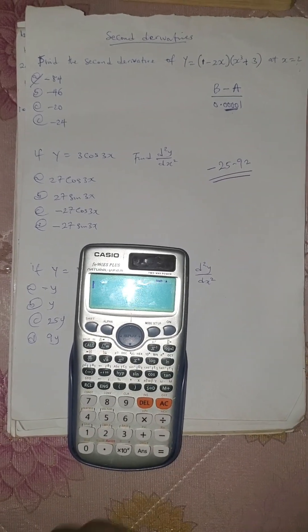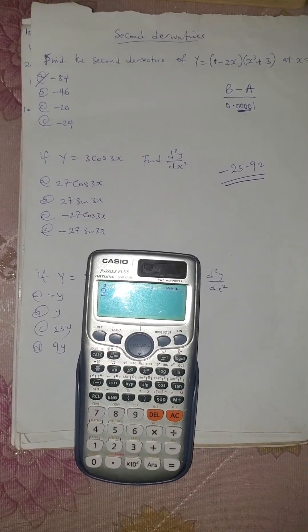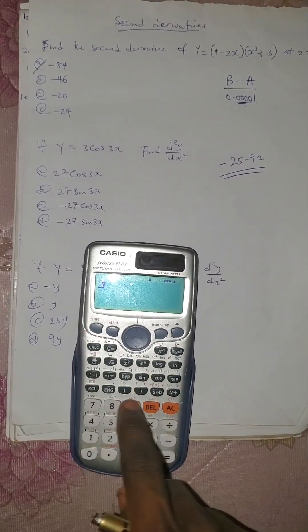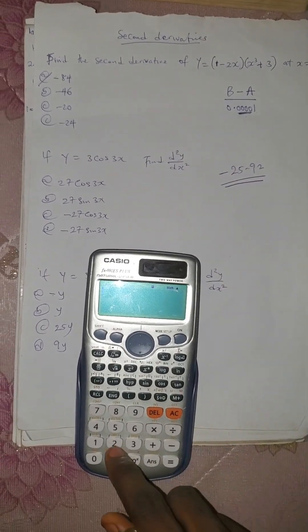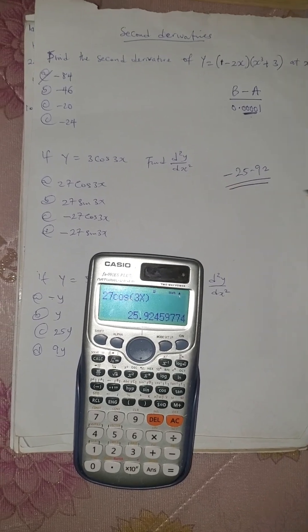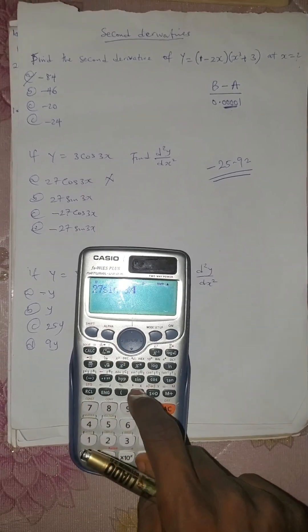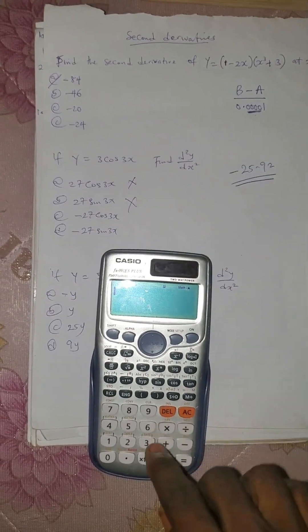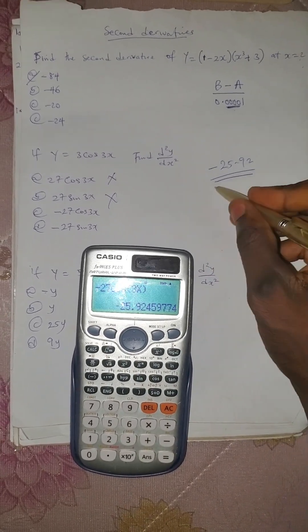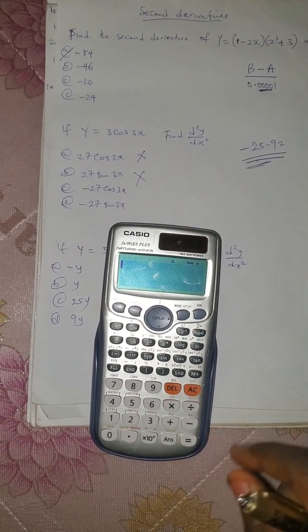Now let's find which option gives us minus 25.92. Save your x as 2 — you can use any value of x, but make sure the same x used for the question is used when checking the options. Press the options one after the other: option A is 27 cos(3 alpha x) — that gives 27.92, not minus, so it's not the answer. Option B is 27 sin(3 alpha x) — that gives minus 7 point something, not the answer. Option C is minus 27 cos(3 alpha x) — that gives minus 25.97, which is the correct answer. This matches the value we got, so press AC.